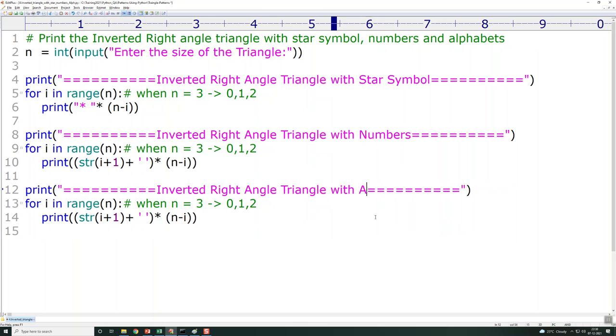As in the previous video, I've already explained that we can get the alphabet A by using the chr function. chr of 65 gives us A, 66 gives B, and so on with the sequence, plus i. Let's try to run it and see.